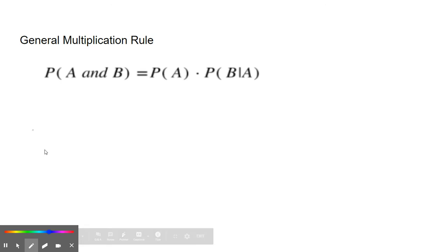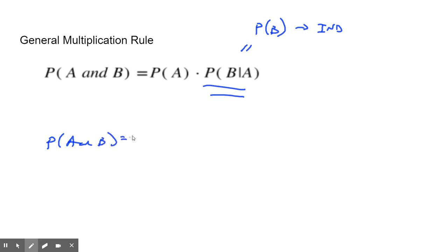So notice the only difference here is this part. If the events are independent, remember that the probability of B given A is equal to the probability of B. That's for independent events. So that's why in the previous set of notes, we had this formula, the probability of A and B equals the probability of A times the probability of B. That's for independent.